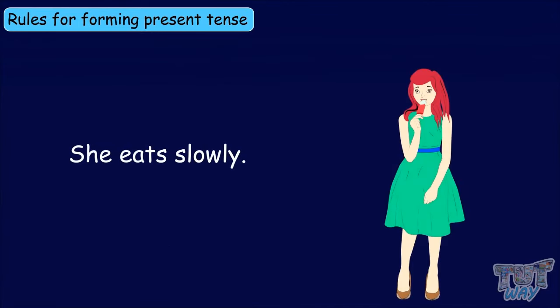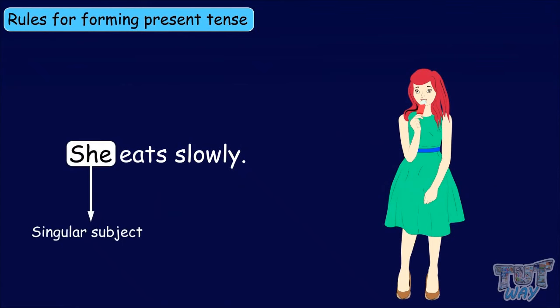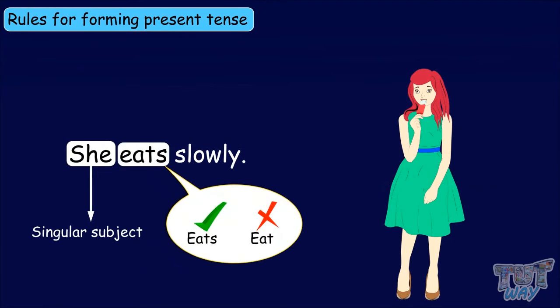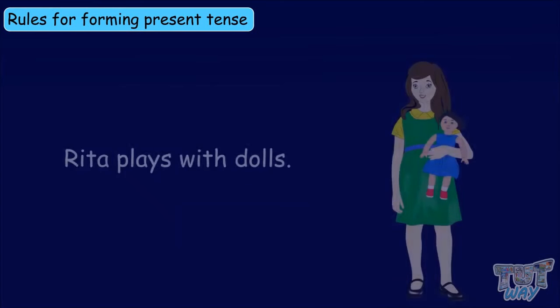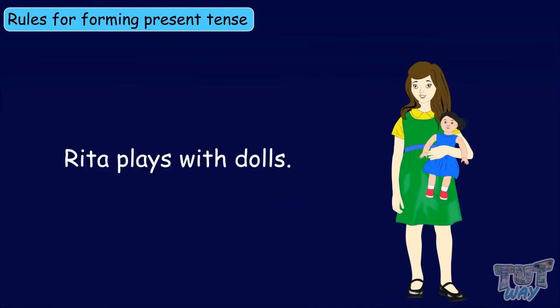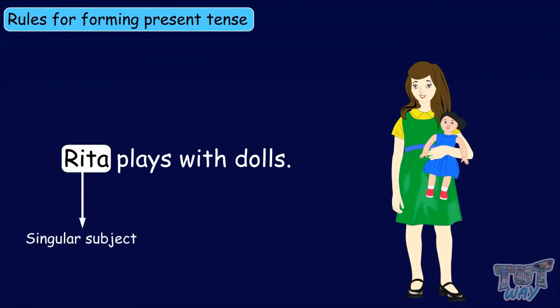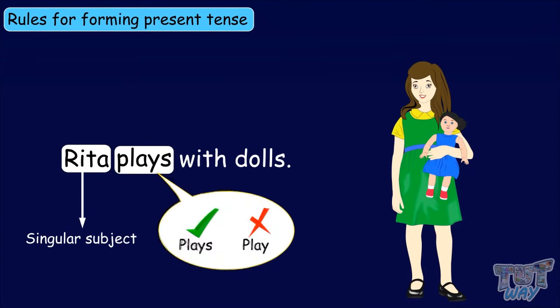Let's have a look at some more examples. 'She eats slowly.' Here, 'she' is the subject, and it is a singular pronoun, so we have used 'eats' and not 'eat.' 'Rita plays with dolls.' Here, the subject is Rita, and since it is a singular noun, we have used 'plays' and not 'play.'